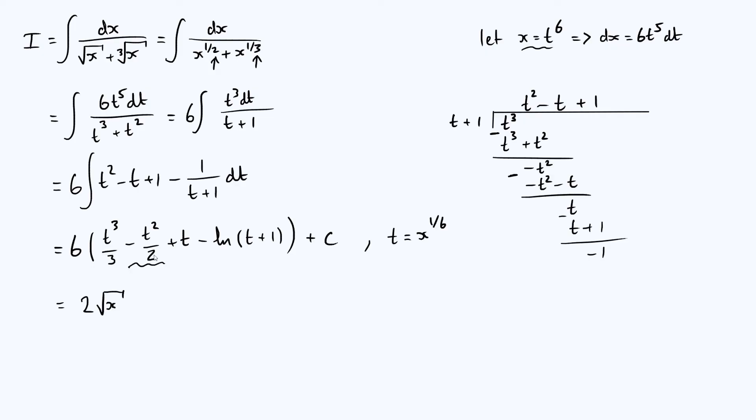Now, how about the second term? So we get minus 6 over 2, which is minus 3. Then t squared is x to the 2 6th, or x to the 1 3rd, or the cube root of x. And so we get minus 3 times the cube root of x.